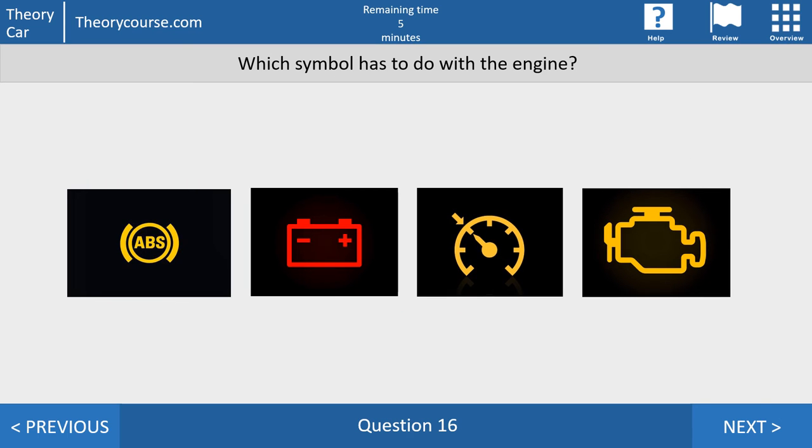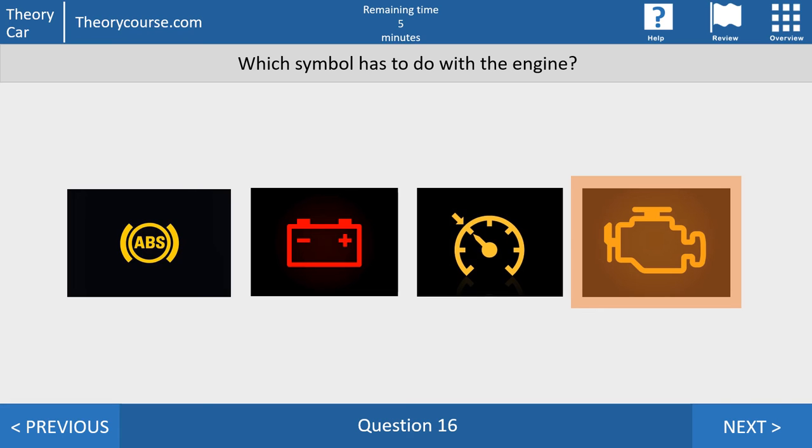Question 16. Which symbol has to do with the engine? And you have to push on the right symbol. And the right symbol is the last one. This symbol has to do with your engine. Question 17. The first symbol is ABS. Anti-lock braking system. The second one has to do with your battery. And the third one. Do you know what it is? No, it's not a clock. It's the cruise control. Very good.